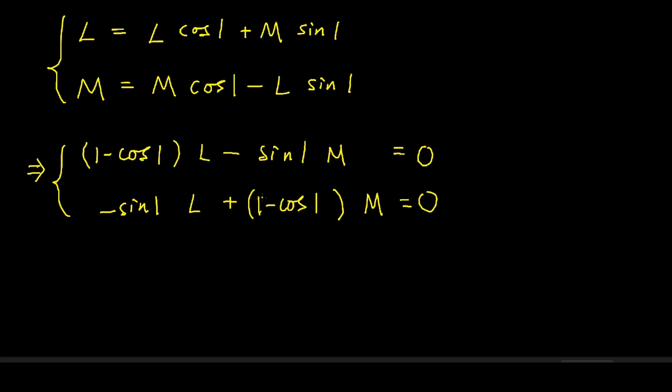So this is a system of linear equations in L and M. And the right-hand sides are both 0. It is a standard fact in linear algebra that if the determinant of the system is non-zero, then the system only has zero solutions, i.e. L equals M equals 0. So now let's evaluate the determinant and see what happens.